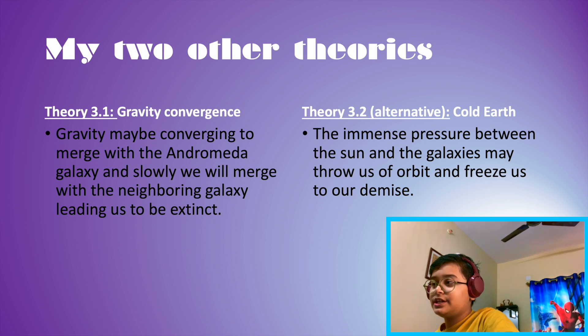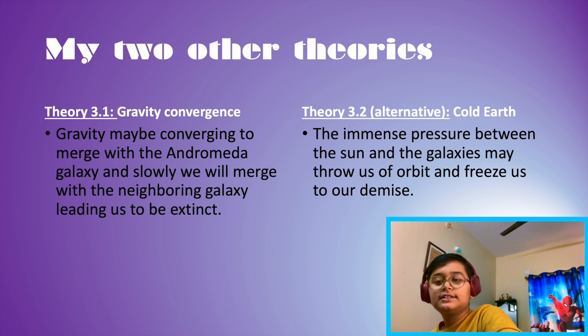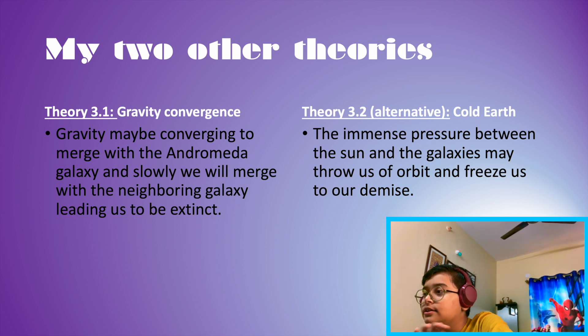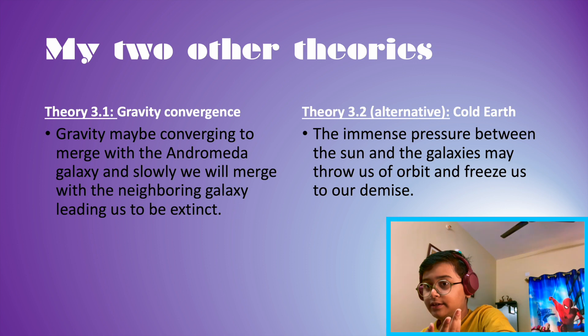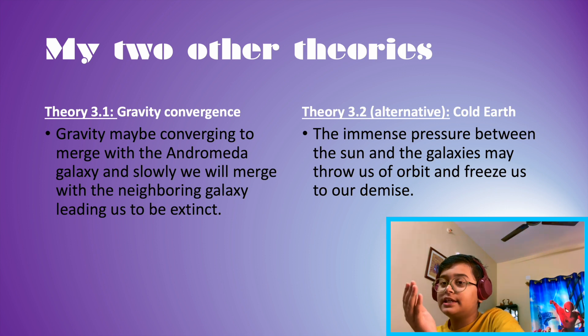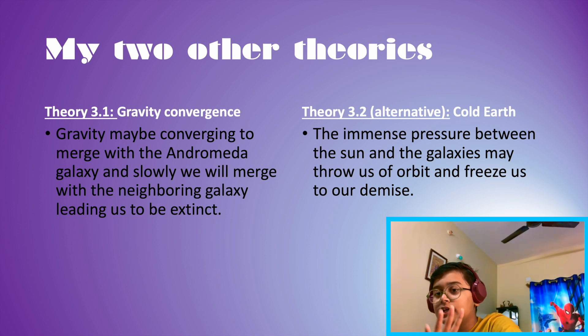Gravity Convergence Theory and Cold Earth. This is 3.1 and 3.2. Theory 3.1 is the real theory. 3.2 is the alternative theory. It just says that what if this happens before the original theory happens. The original one follows in its tracks. It's like a spin-off of theory one, the Runover Collapse Theory.